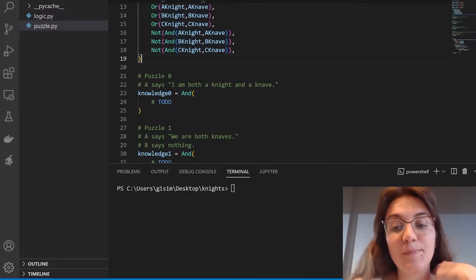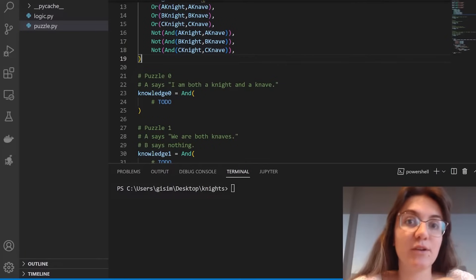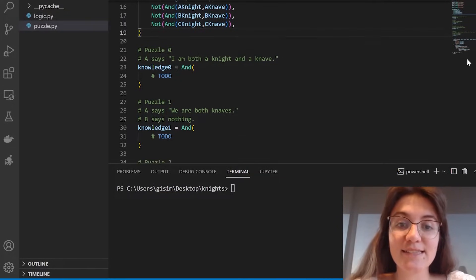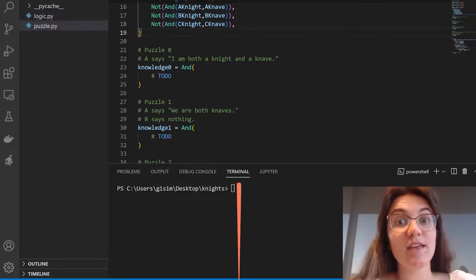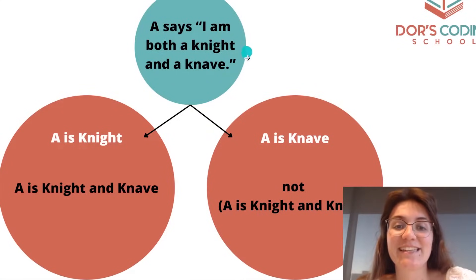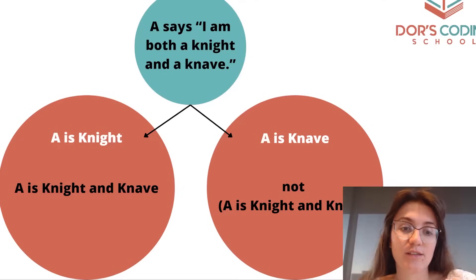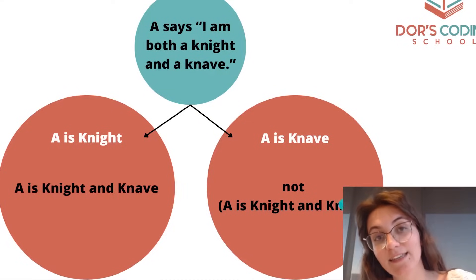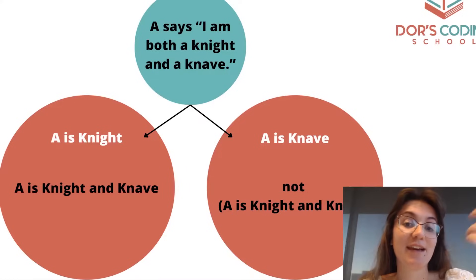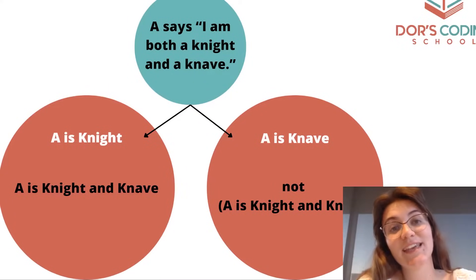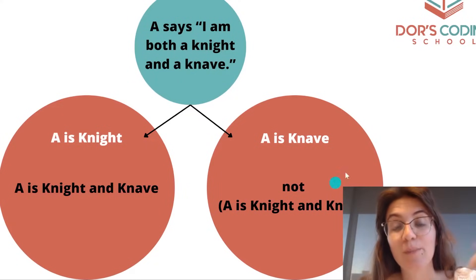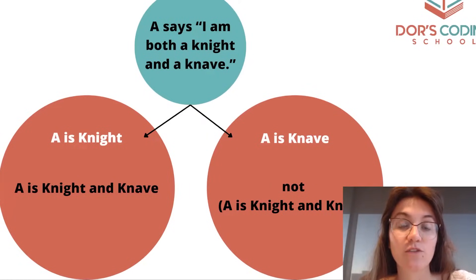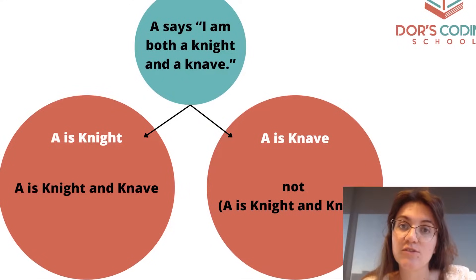Now we can start working with every puzzle. The first one says: A says 'I am both a knight and a knave.' Let's think about the options. When A says that, we have two implications: either A is a knight and he's saying the truth that he's both a knight and a knave, or A is a knave and he's lying that he's a knight and a knave. Without the AI, we know A is a knave because A cannot be a knight and a knave at the same time. But we have to make our AI understand this and find the solution.